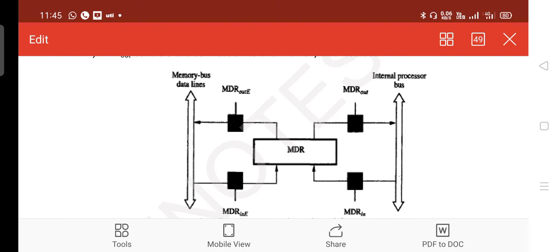Two gating things are required. One towards internal processor bus, and the other one towards the memory bus data line. Both input and output gating towards the connection. MDR_out and this side it is marked as out_E, and MDR_in as well as MDR_in_E.